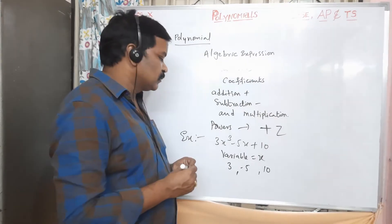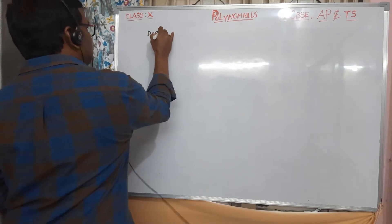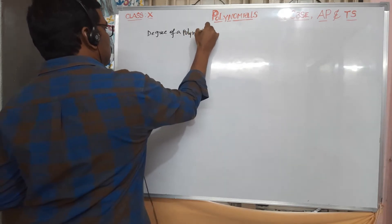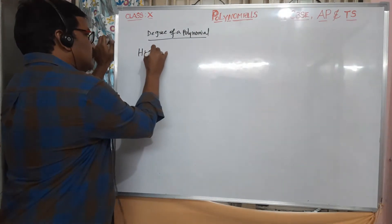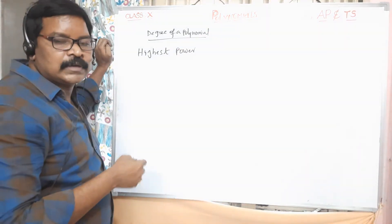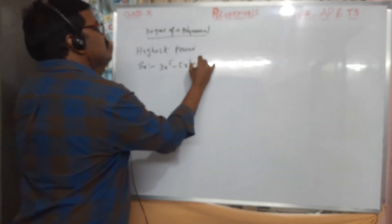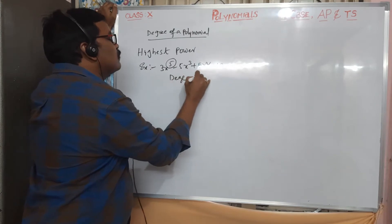The degree of a polynomial is the highest power of the variable. For example, in 3x⁵ minus 5x³ plus 5x² minus 10, the highest power of the variable is 5, therefore the degree of this polynomial is 5.